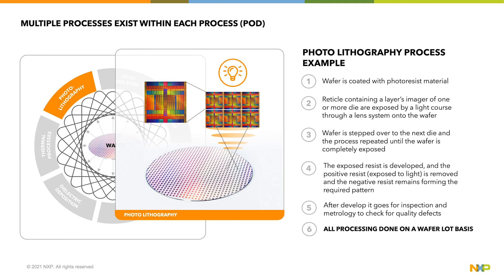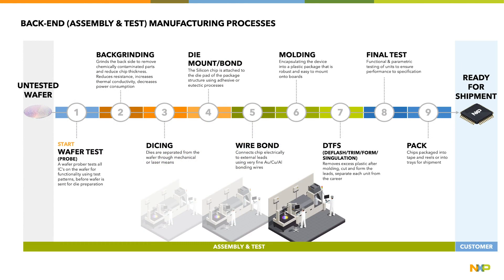This very complicated process is one of many steps required to create just one layer of the wafer, and many products have over 50 layers to be processed. After the fab process, the wafers will enter the back-end processing steps. These steps can vary widely depending on the type of semiconductor package, but this chart depicts a typical packaged semiconductor flow. The flow will start with wafer test, then back grind, dicing, die mount, wire bond, molding, deflash trim and form, final test, and then finally packaging in either trays or tape and reel.